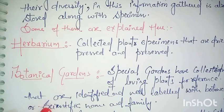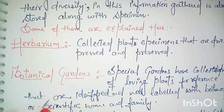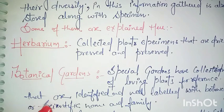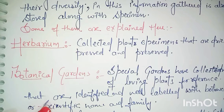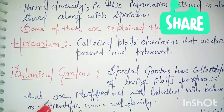Next we have botanical gardens, where living plants are collected for the reference of future study. We can recognize the plant species in the garden. In the garden, many plants have already grown and are identified by labelling.